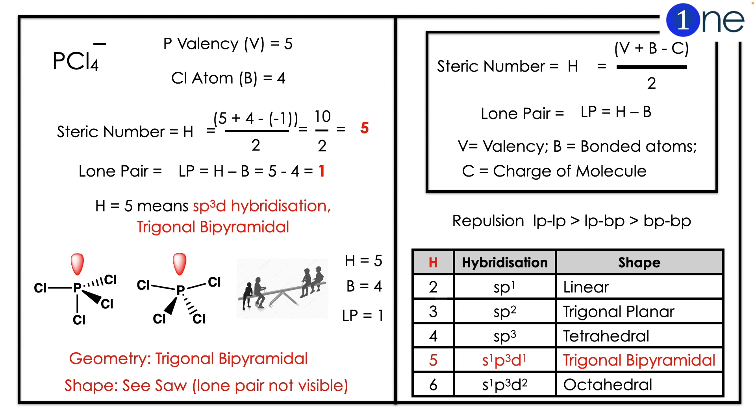To find the hybridization, you should know the steric number. Steric number is (V + B - C) / 2. So phosphorus valence is 5, chlorine atoms are 4, so total is 10. Divided by 2 gives 5.